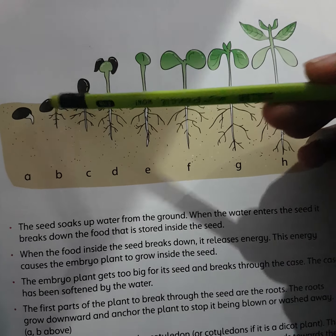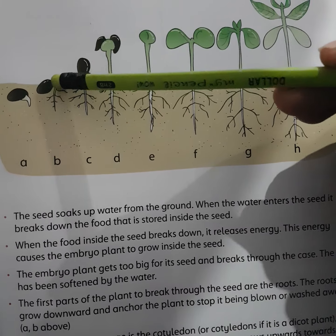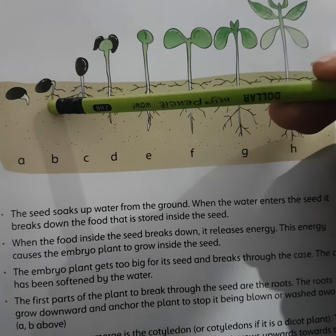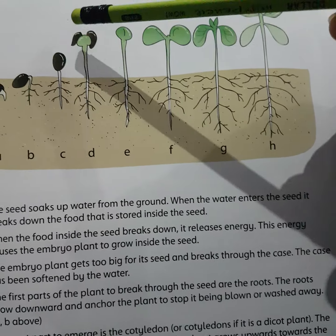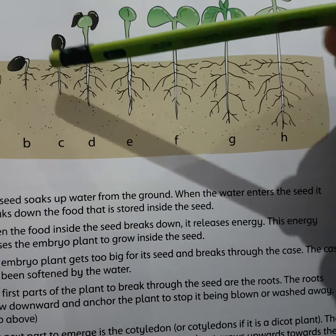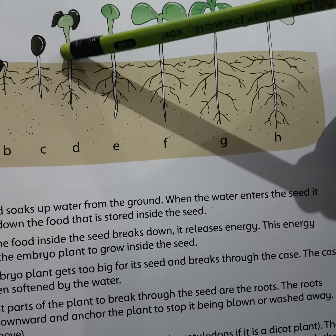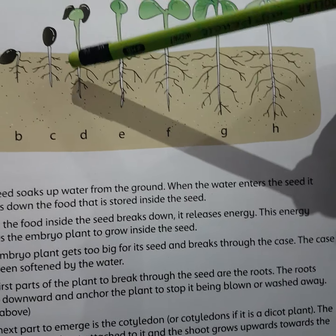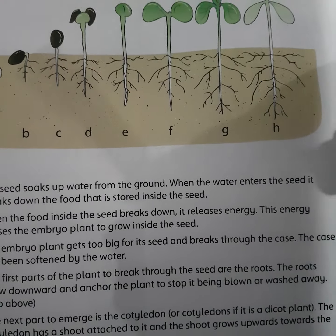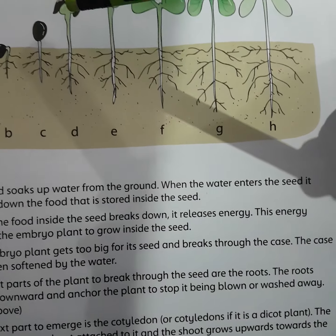Roots, plant का first part होती हैं जो downward — यानी ज़मीन के अंदर नीचे की तरफ grow करती हैं। Cotyledons यानी seed leaves जो हैं वो shoot contain करती हैं जो upward — ऊपर की तरफ grow करना start करती हैं। जब यह ऊपर की तरफ grow करती हैं तो इसके ऊपर मौजूद seed coat مکمل طور پر یہاں سے remove ہو جاتی ہے۔